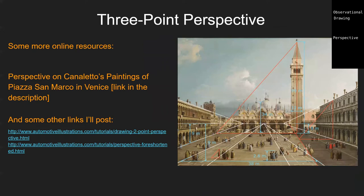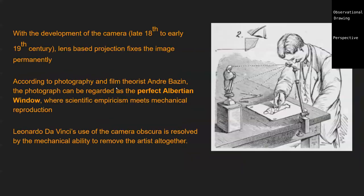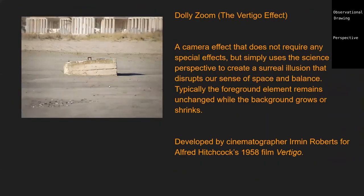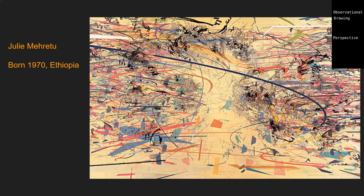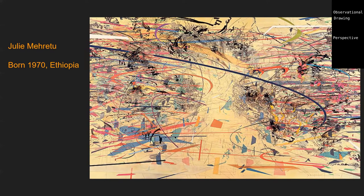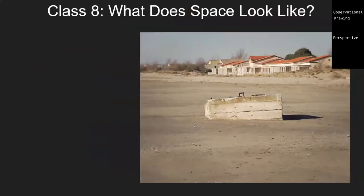I've put all of this in a PDF on the Moodle, along with more examples of complex perspective tutorials and historical examples. There's a lot of interesting theory at the end we won't go into. Julie Mehretu is a fascinating artist who does quite a lot with architectural space and perspective, if anyone's interested.